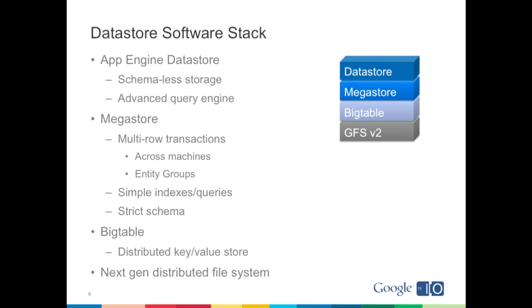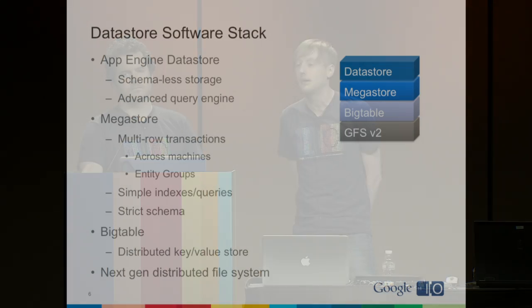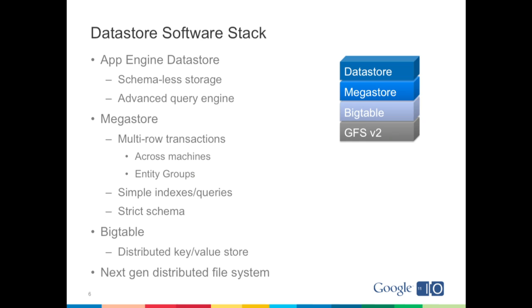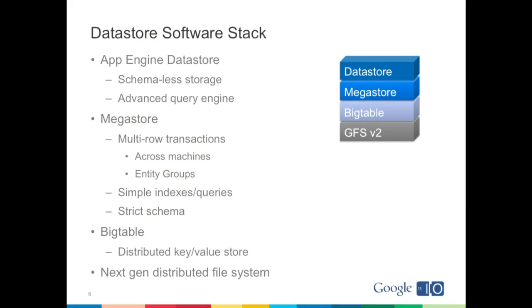In order to understand how the Datastore works, it's important to understand what it's made of. The Datastore is not one large monolithic piece of software but rather the culmination of many layers of distributed storage architecture. Many of these layers are common to lots of Google services. At the top we have the Datastore, which provides schema-less storage to App Engine applications and arguably one of the most advanced query engines of any distributed storage database. The Datastore stores its data directly in Megastore, which is a common piece of Google infrastructure. Megastore provides a SQL-like interface to distributed storage with a strict schema, similar to an SQL database, and provides multi-row transactions that can span machines.